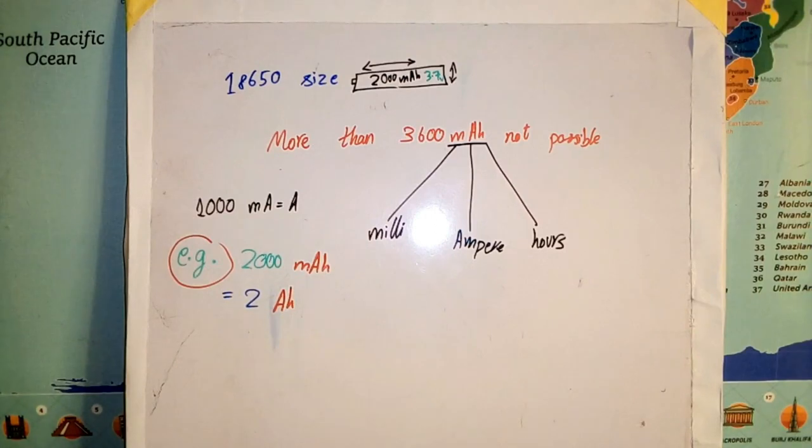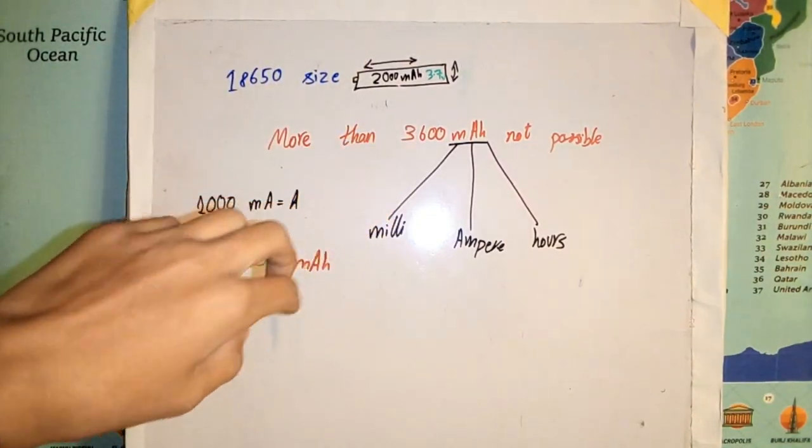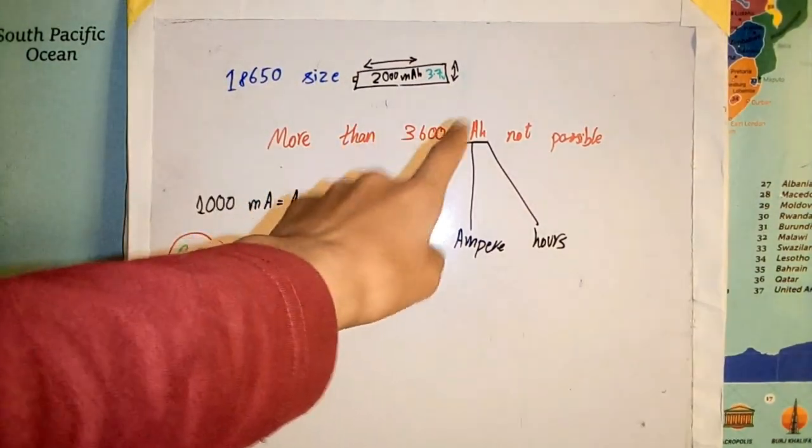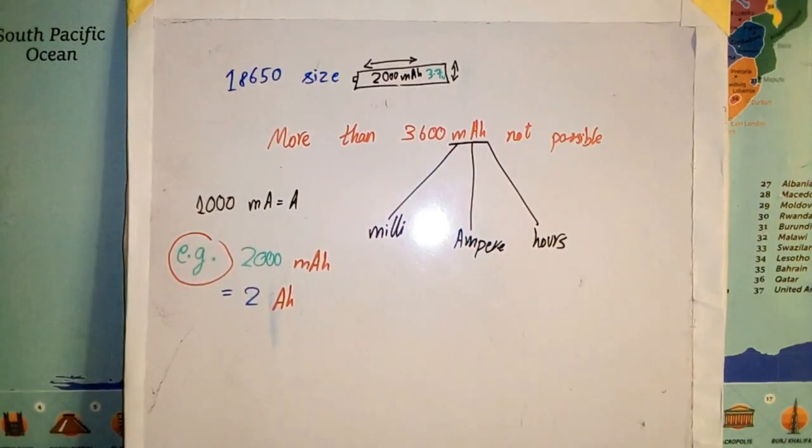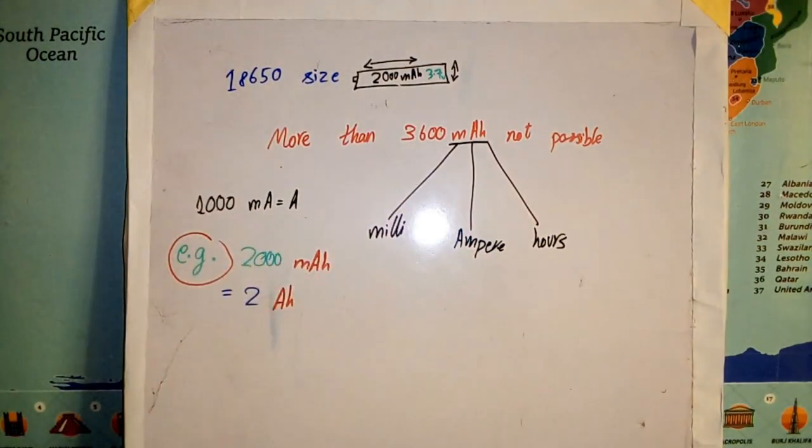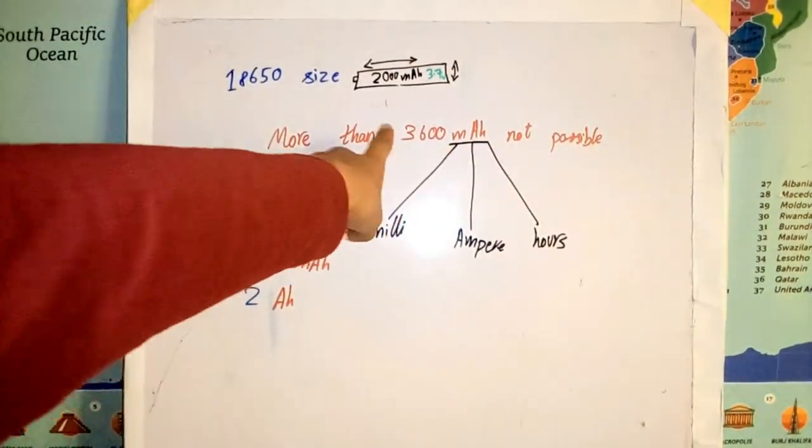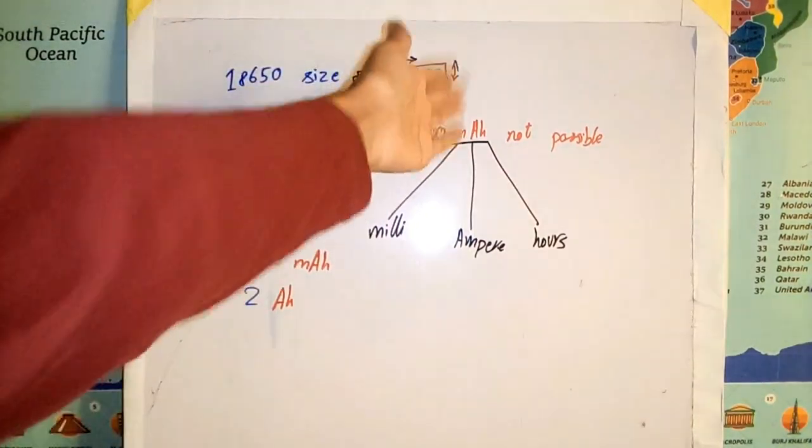So let's look at this. Here I've written a fact that within the 18650 size, more than 3,600 mAh is not possible. So if you see any brand claiming that their 18650 battery is more than this, then it means it's a scam. But what is mAh?